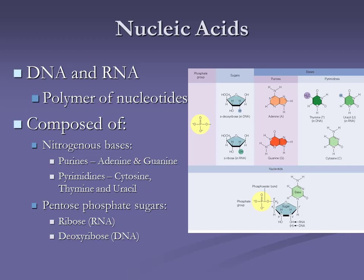These are our monomers. Remember, as we talked about the condensation reactions and the polymerizations — for the polymer nucleic acids, our monomers are going to be the nucleotides. So we've got our sugar, and we're also going to have this phosphate group.